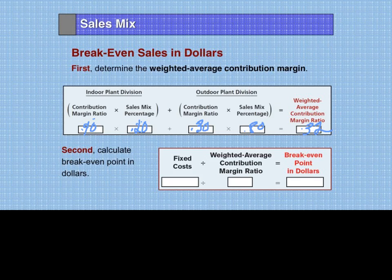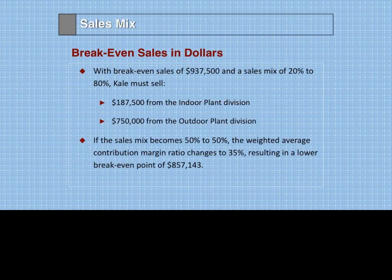Therefore, to get break-even sales in dollars, we simply divide the fixed costs of $300,000 by the contribution margin ratio of 32%, and we get total break-even sales of $937,500. Keep in mind that 20% is indoor and 80% is outdoor, so we convert it back: 20% of $937,500 gives indoor plant sales of $187,500, and 80% gives outdoor plant sales of $750,000.